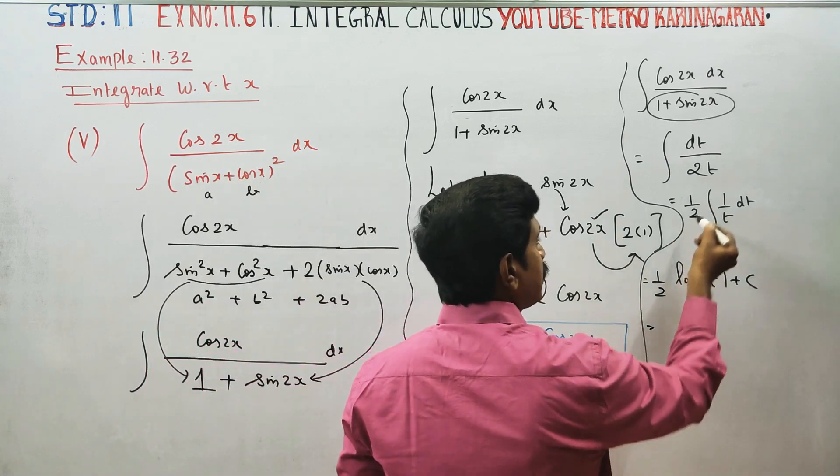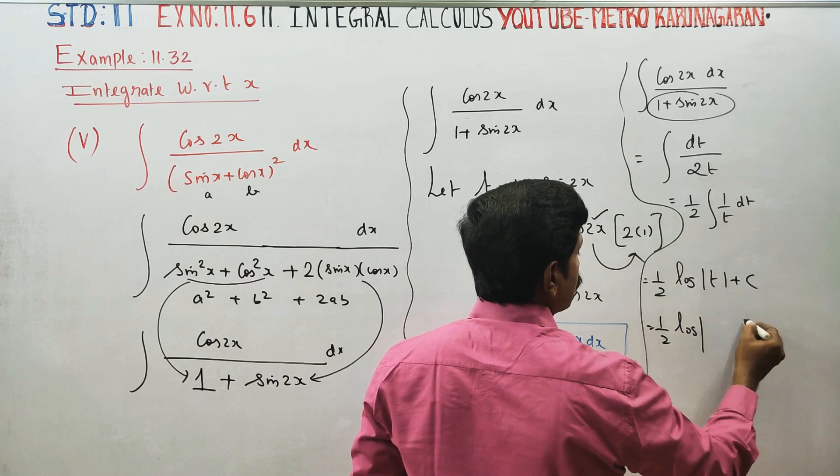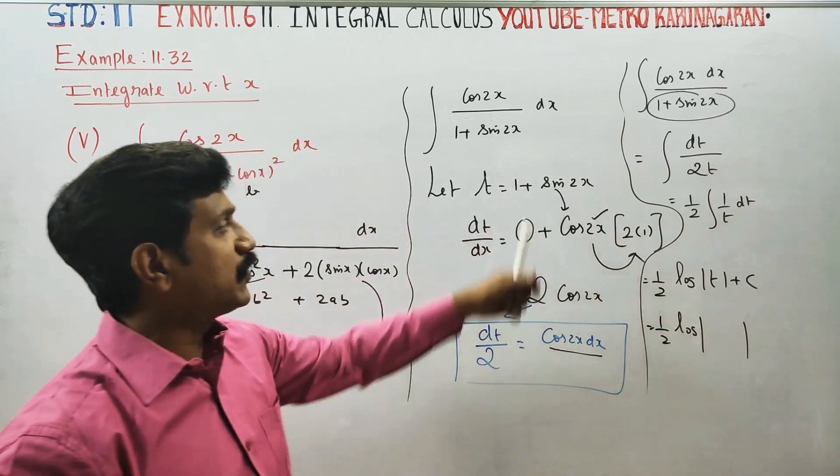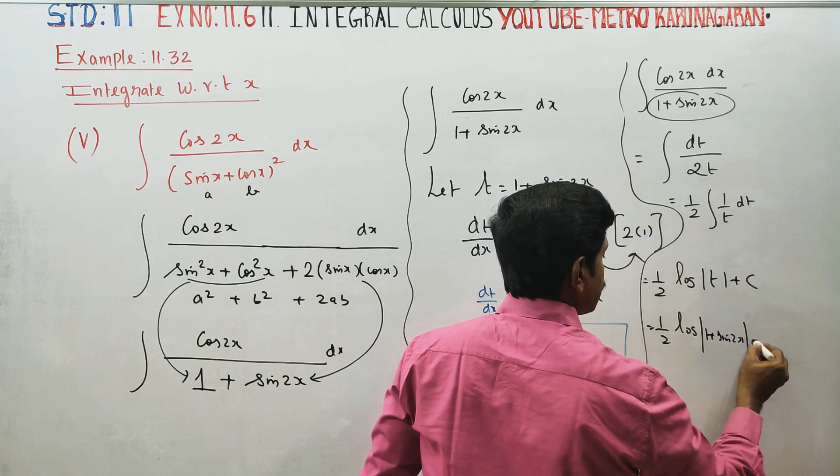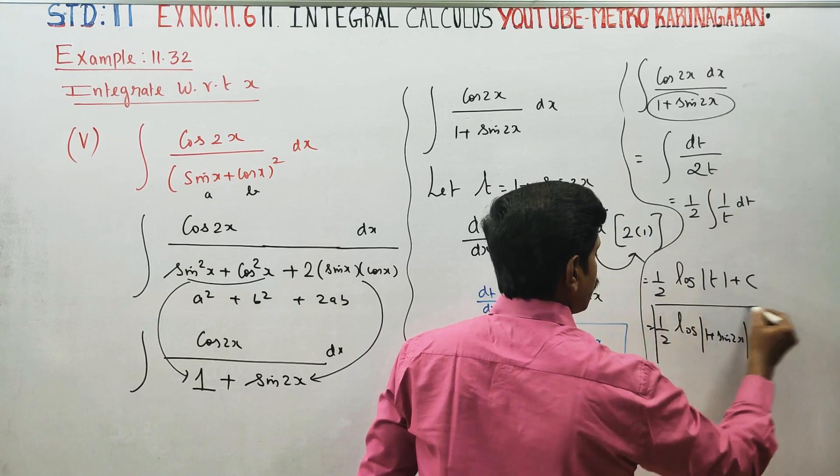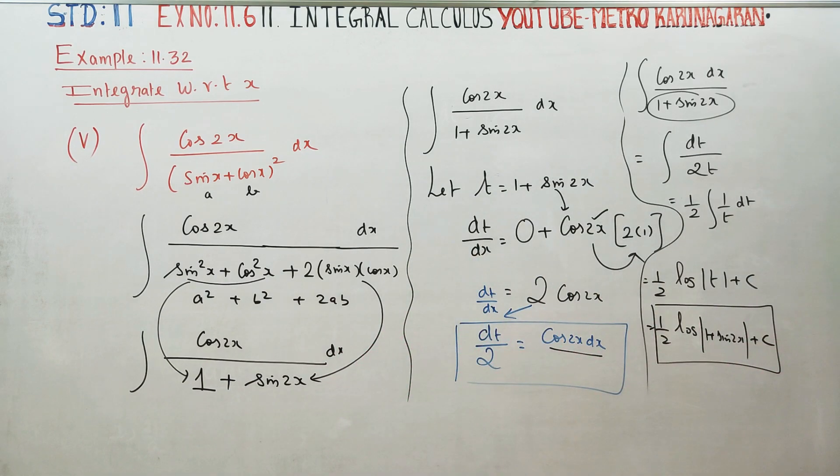So we have (1/2) times the logarithm of t, where t is (1 + sin(2x)). The final answer is (1/2)log(1 + sin(2x)) + c. Thank you.